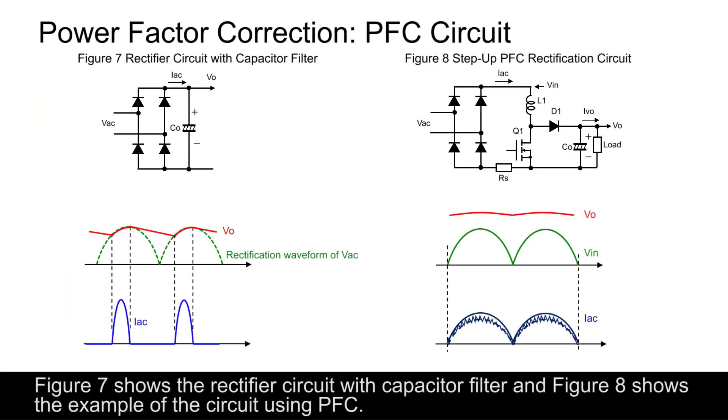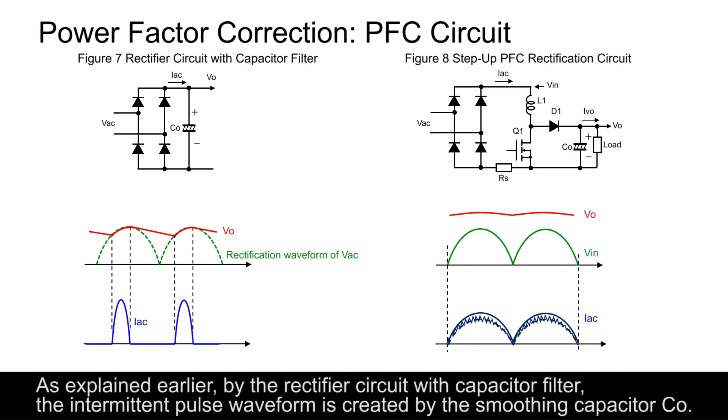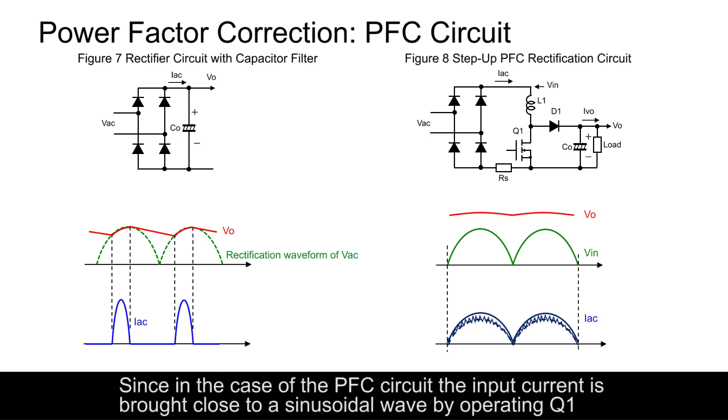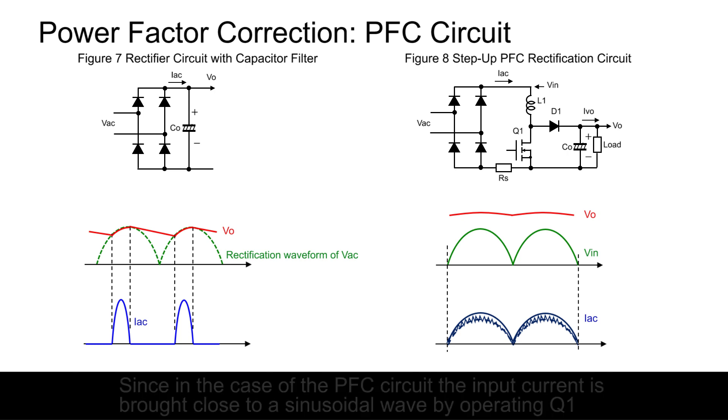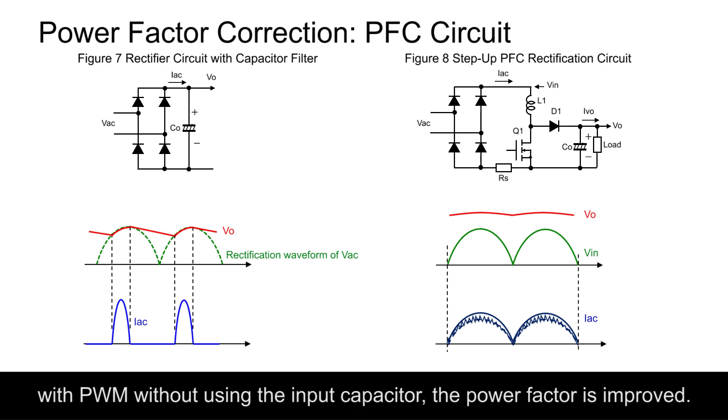Figure 7 shows the rectifier circuit with capacitor filter and Figure 8 shows the example of the circuit using PFC. As explained earlier, by the rectifier circuit with capacitor filter, the intermittent pulse waveform is created by the smoothing capacitor CO. Since in the case of the PFC circuit, the input current is brought close to a sinusoidal wave by operating Q1 with PWM without using the input capacitor, the power factor is improved.